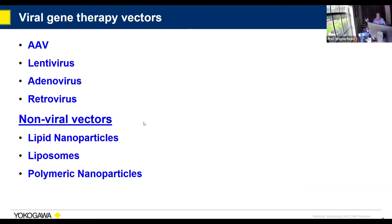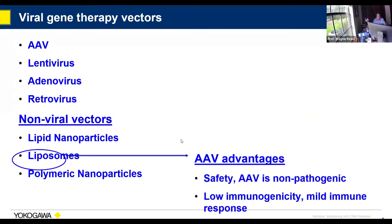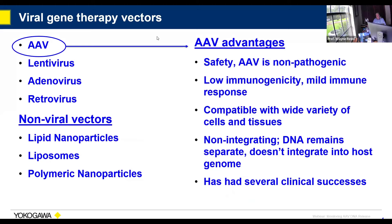We have other means of doing gene therapy — AAV is one of the top ones, but you also see other viruses used. There's also a lot of work in non-viral vectors: lipid nanoparticles, polymeric nanoparticles. Concentrating on AAV, some of the advantages include its safety — it's not pathogenic. It's compatible with a wide variety of cells and tissues. The DNA remains separate; it doesn't integrate into the host genome. And it's had some clinical successes.